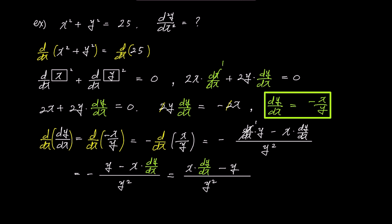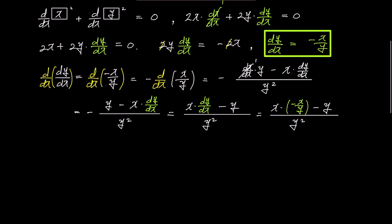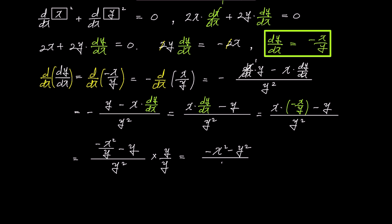The dx over dx in the numerator is simply 1, as it's the derivative of x with respect to itself. Simplifying, we get minus y minus x times dy over dx over y squared. Multiplying the minus sign through, it becomes x times dy over dx minus y over y squared. Substituting the previously found dy over dx equals negative x over y, it becomes x times negative x over y minus y over y squared, giving negative x squared over y minus y, all over y squared.